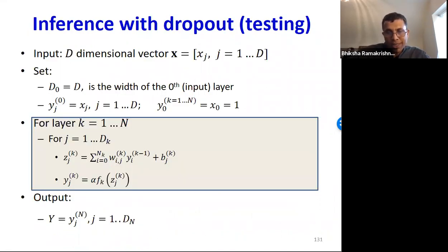So, here is the pseudocode for testing with dropout models. It's just the regular forward pass, except now the activations are multiplied by alpha.